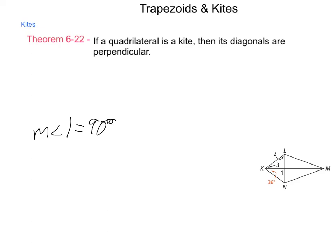The diagonal KM bisects angle LKN, so angle 3 is equivalent to the other side — the measure of angle 3 is 36 degrees. That just leaves finding angle 2. The measure of angle 1 plus the measure of angle 2 plus the measure of angle 3 has to equal 180 degrees, since they're all parts of the same triangle.